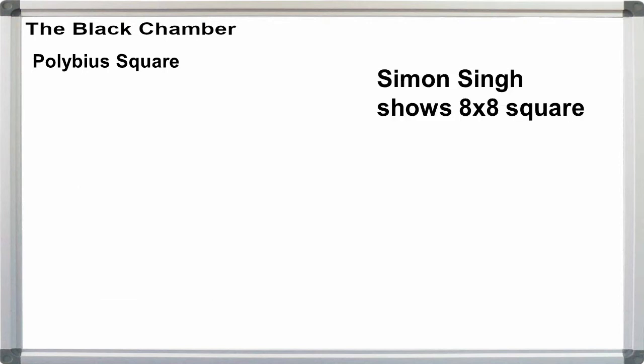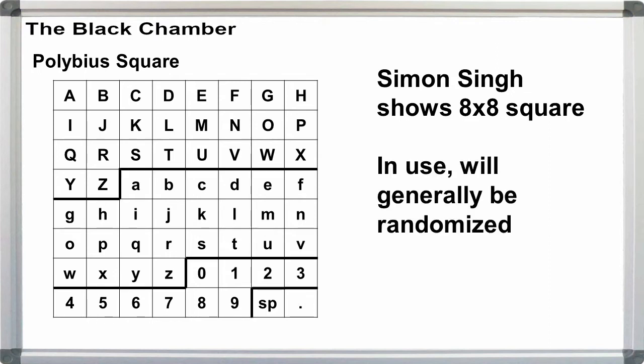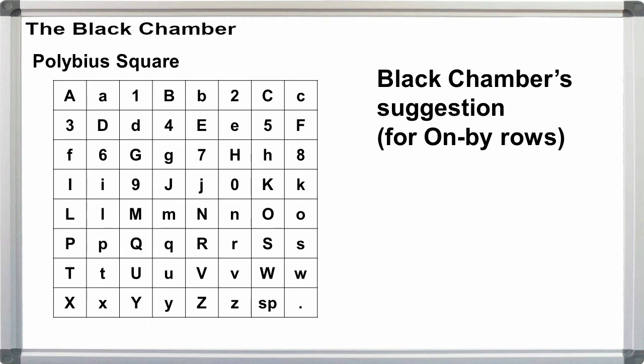Simon Singh showed an 8x8 version in his 1999 The Code Book, which allows for both upper and lower case letters, the digits 0 through 9, space, and the period character. Following the ACA's guidelines for 6x6 alphabets, the Black Chamber advocates for the following 64-character alphabet, with the upper and lower case letters paired, and the digits following the letters A through J, as with the 36-character alphabet. At present, the Black Chamber has no plans for creating 8x8 practice ciphers. But at least this way, we've pounded the stakes in the ground, and I've added an extra minute or two of content to the video.